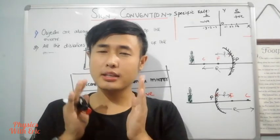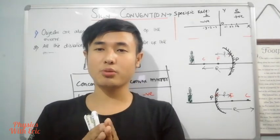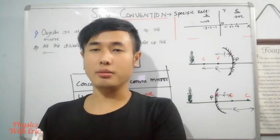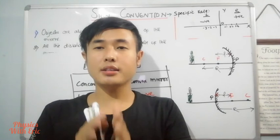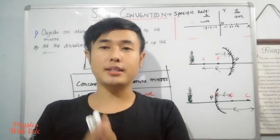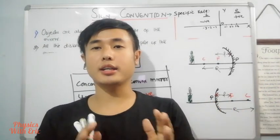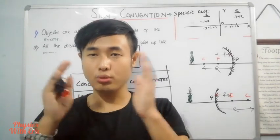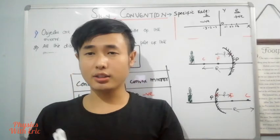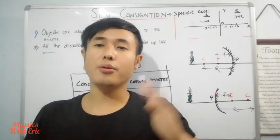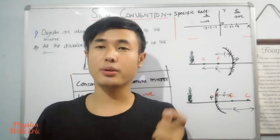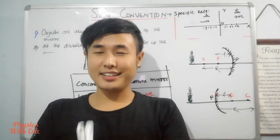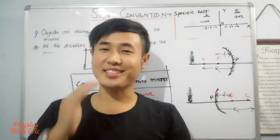So, using sign convention we can find the object distance and solve numericals. This sign convention is one of the important things we need to use in the numericals. Okay, hope you all got it. Thank you for watching and see you in the next video.